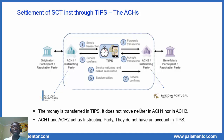We conclude by considering the ACH. ACH1 and ACH2 can be replaced by any CSM that settles true TIPS — for instance, Deutsche Bundesbank or Banco de Portugal. The money is transferred in TIPS; it does not move in ACH1 nor in ACH2. The fund transfer happens in TIPS. ACH1 and ACH2 act as instructing parties — they are not allowed to have an account in TIPS. They act as a bridge between the participant or reachable party and TIPS.